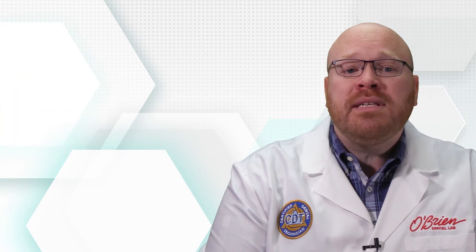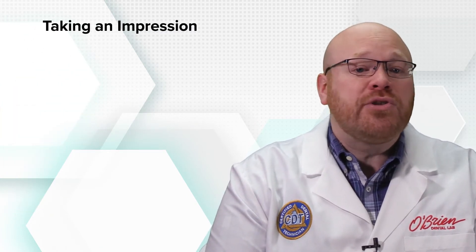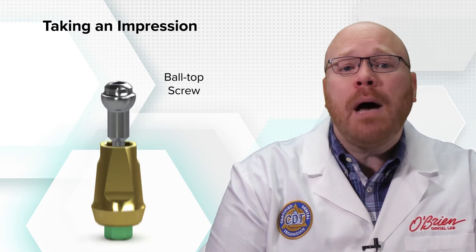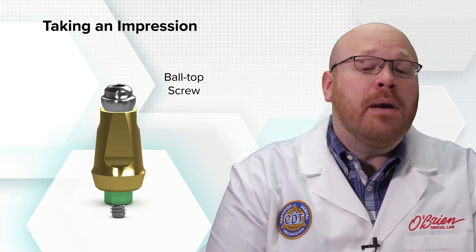To use the 3-in-1 abutment to take an impression, there is a separate screw that needs to be used. It's called the ball top screw, and when used, the ball top extends out of the coronal end of the abutment.